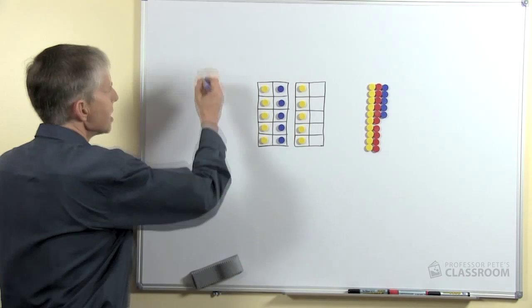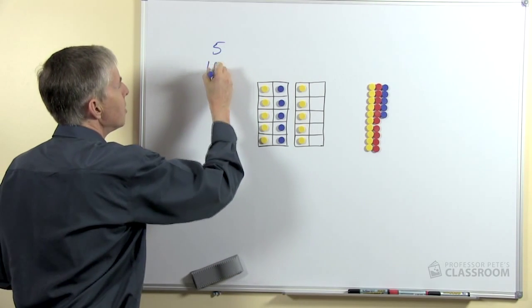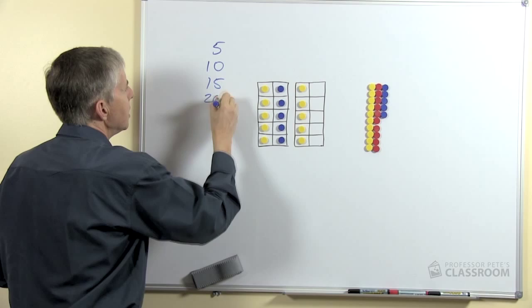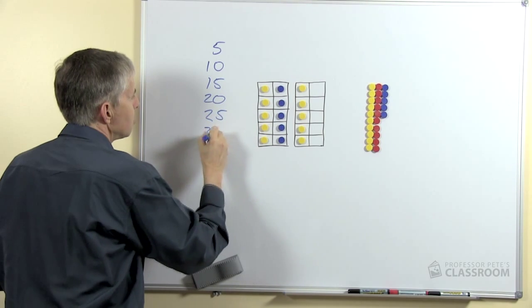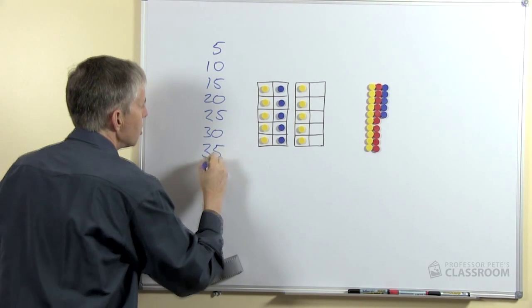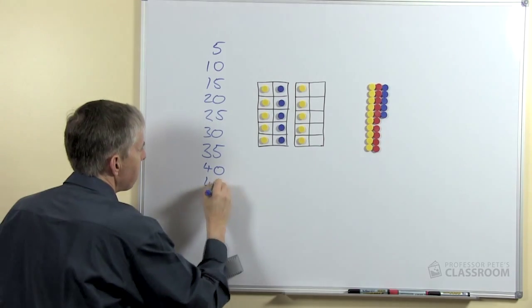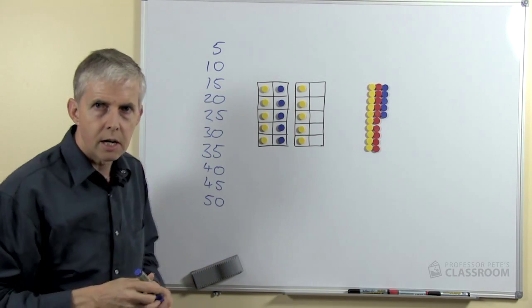So if we look at the 5 times table, if we just look at the multiples of 5 and if you simply started a lesson with your students and asked them what the multiples were, they'd quickly tell you. There they are.